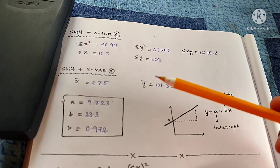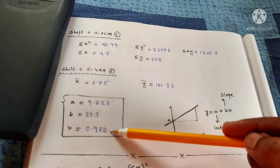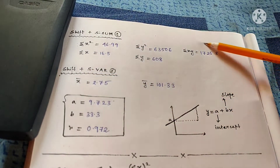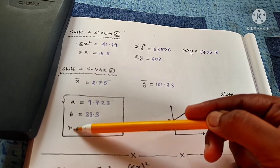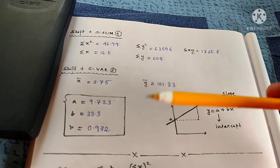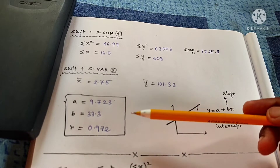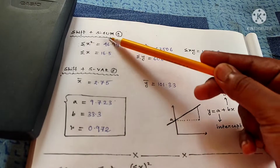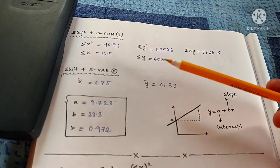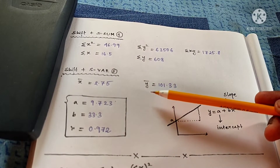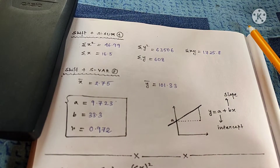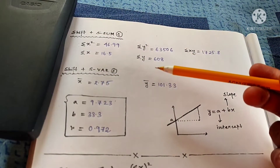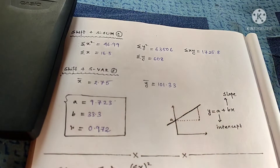But in your examination, they will not expect you to directly write down these three values from your calculator. They expect you to find out these values manually using some formulas, which I will discuss in today's video, and then you can verify if your solution is correct by matching with these calculator values. That is why I am saying — before watching this video, don't forget to watch Part 1, whose link is given in the description box below or on the I button above.